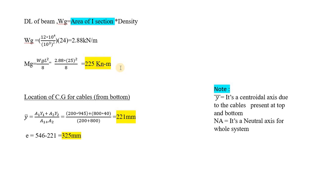Be thorough with the units. For load, it is 2.88 kilonewton per meter — whenever you get this 'per meter' it is clearly understood that it is a UDL. When you have a point load you will get only kilonewton. When you have a UDL you will get kilonewton per meter. For moment, it is kilonewton meter.